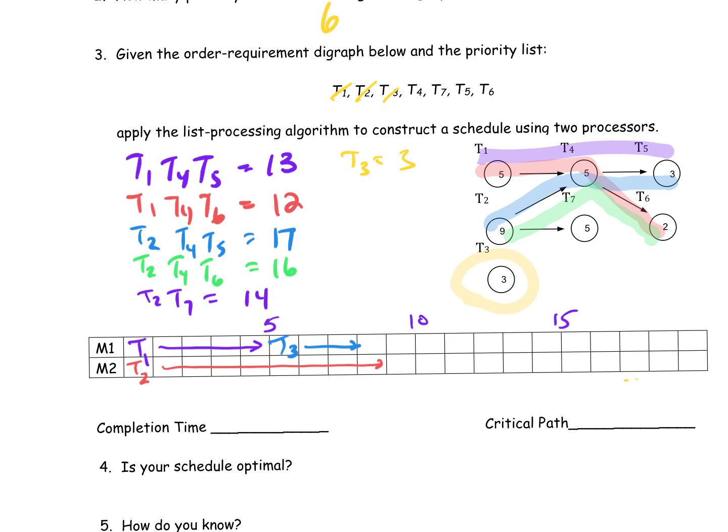Now I look at Task 4. Task 4 is being fed by Task 1 and Task 2 — both have to be completed before I can schedule Task 4, so it goes after Task 2. I want to try to schedule it on Machine 1. After Task 3, we've got idle time, but then after that I can schedule Task 4. Its completion time is 5, so I need 4 more boxes — takes me out to 14. Take it off your list.